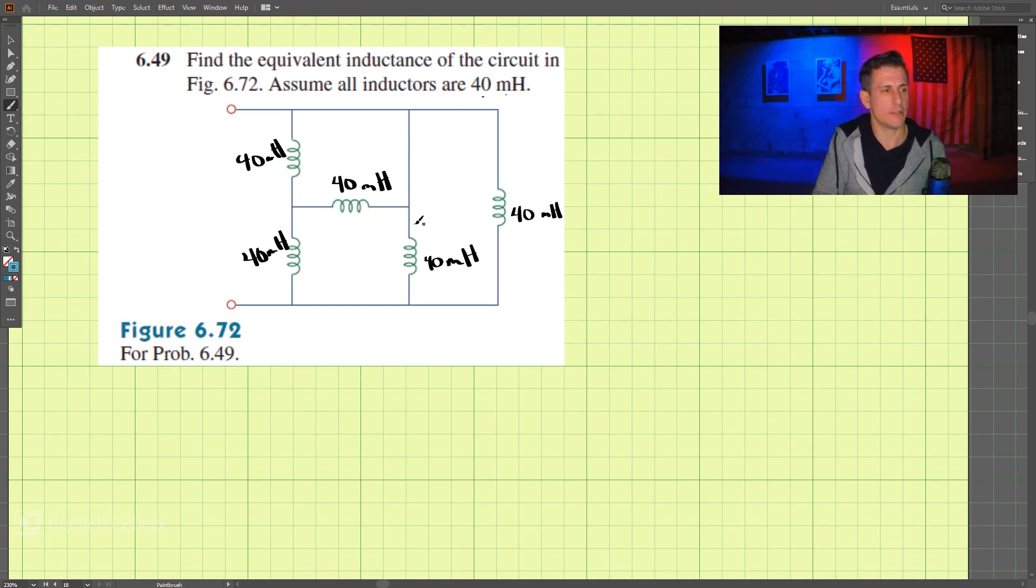It appears that these two, because this is connected here and the other side is connected here, these two are in parallel. So adding those in parallel we have 40 times 40 divided by 40 plus 40, and so that is 1600 divided by 80, and that looks like that is 20 millihenry. Then combining those two, let's redraw this circuit.